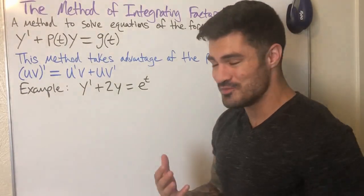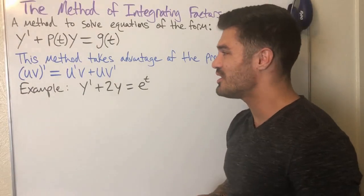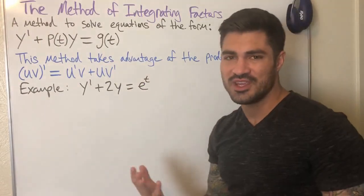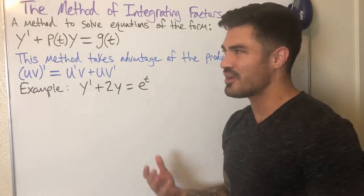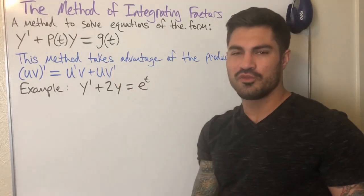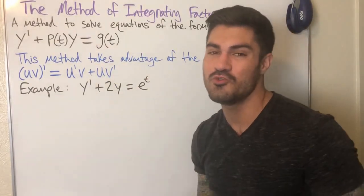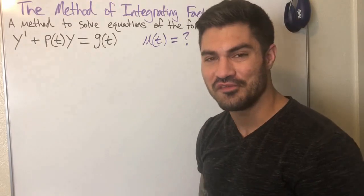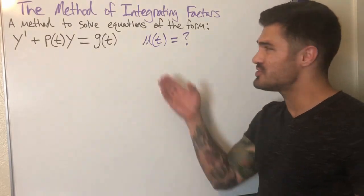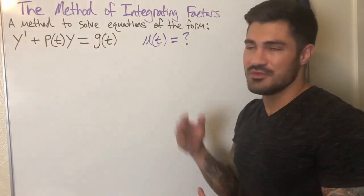That something we multiply by is a function of t, and it's called an integrating factor. For the rest of the video, I'm first going to derive a formula for how to find the integrating factor — working with the general equation. I'd rather do that than just throw a formula at you. Then we'll come back to this example and maybe hit one or two more examples after that.